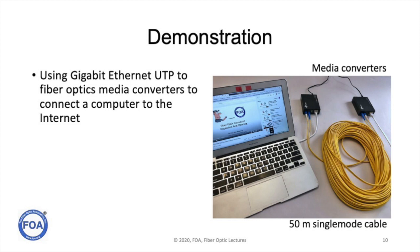Here's an interesting demonstration of how media converters work. I have two media converters that connect ethernet over CAT5 into single mode optical fiber, with about 50 meters of yellow single mode cable connecting them. One media converter is connected to an internet router, and the other is connected to the internet port of a computer. You can see we're browsing the FOA website over the CAT5 cable to the media converter, over 50 meters of single mode fiber to another media converter, and then over a CAT5 cable to the internet router.